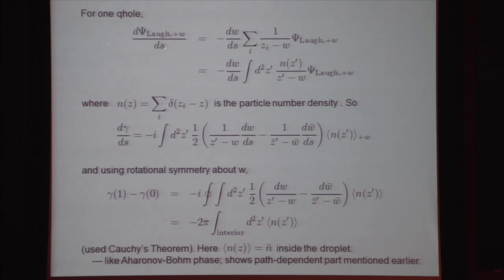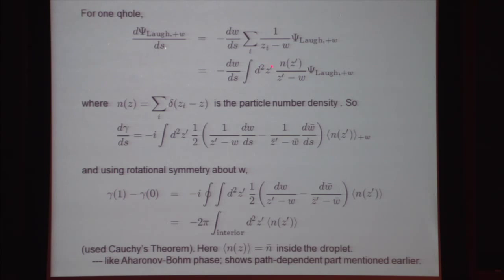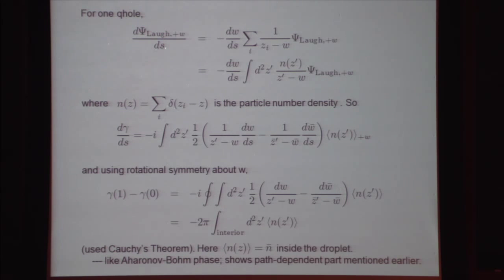Let's actually do this calculation for one hole in the Laughlin state. I'm calling the state Laughlin-plus-w to indicate where the quasi-hole is. It's a good idea to first differentiate the wave function. Since the quasi-hole is just a factor product of z_i minus w, I get minus dw/ds times the sum of 1 over (z_i minus w) times the same function. The sum can be written as an integral over a dummy variable of the density of particles over z prime minus w.